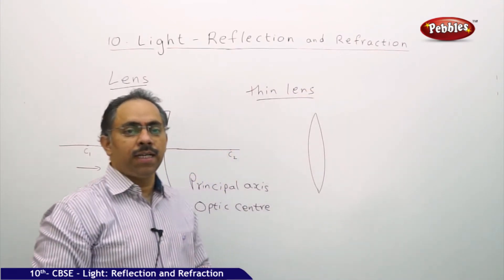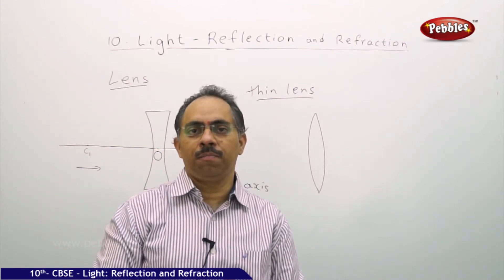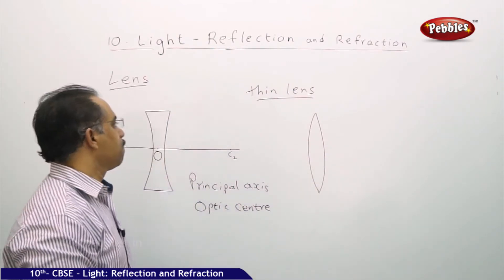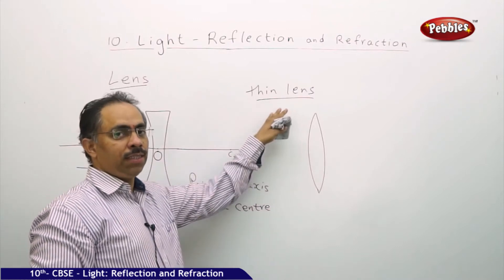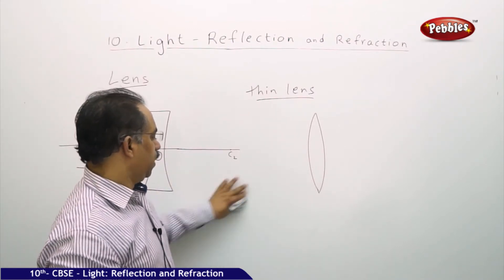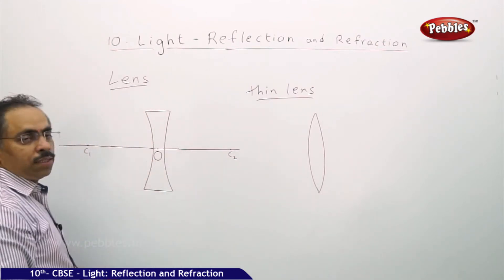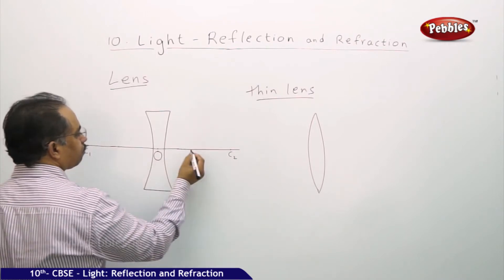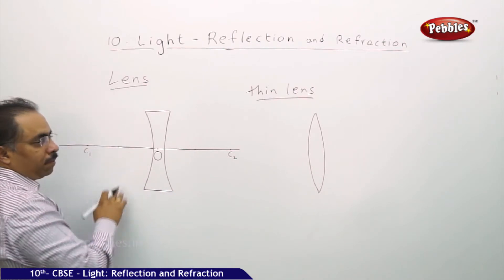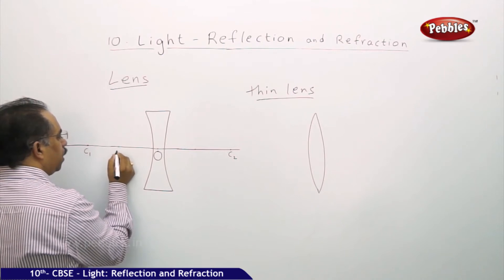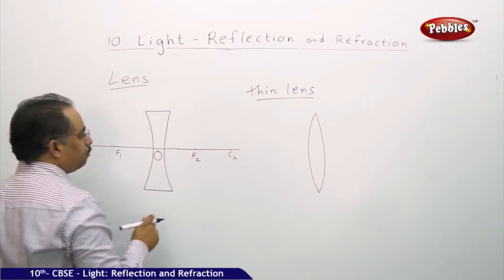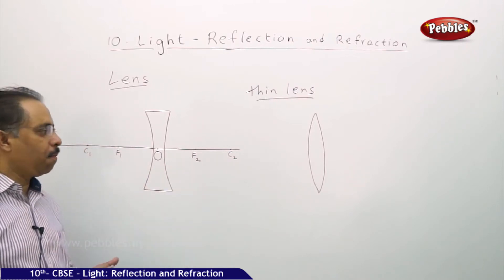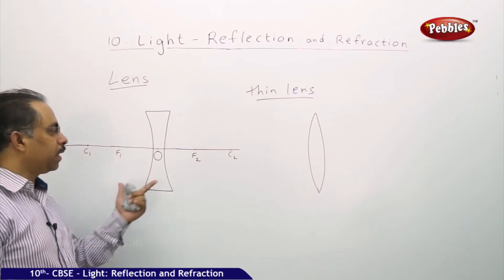A thin lens is the lens where the aperture is small compared to the radius of curvature of the lens — it can be either the left side or right side radius. Our discussion will be based only on thin lenses. Assuming the principal axis and centers of curvature of the two surfaces of the lens, we will define two points roughly halfway — we will call these F1 and F2. Remember, in the case of spherical mirrors we discussed F1 and F2. F is nothing but the principal focus.